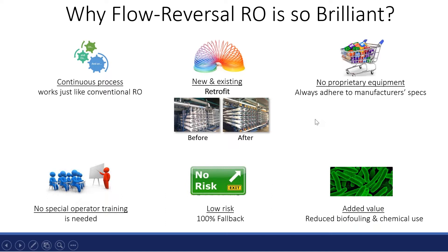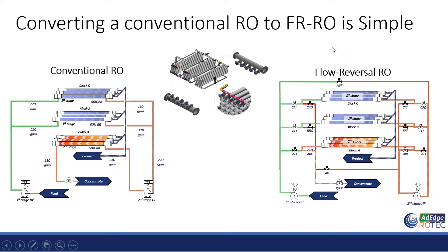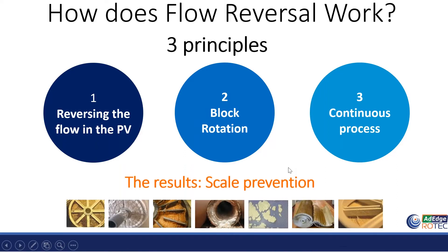To convert a conventional RO to flow reversal, it's quite simple — you add some valves and some piping, and you can operate it as flow reversal. There are three principles to remember: one is reversing the flow in the pressure vessel, two is block rotation, and three is that it's a continuous process. The result is scale prevention.